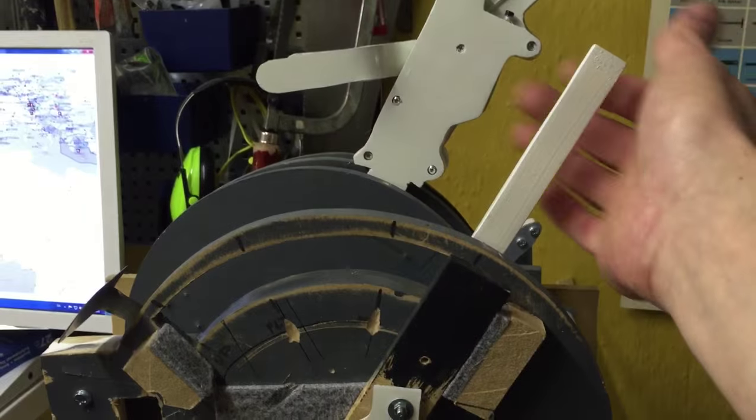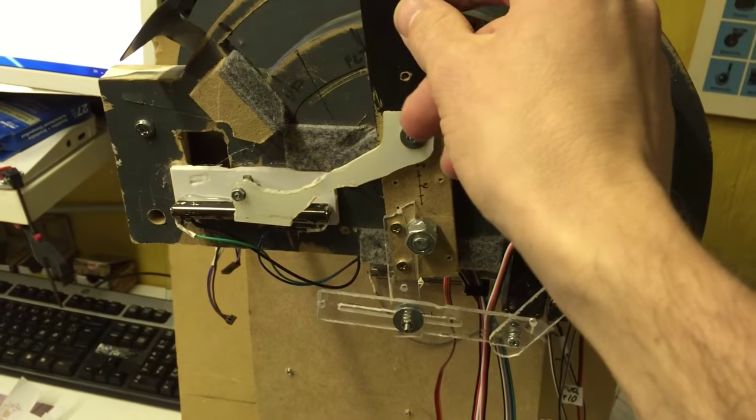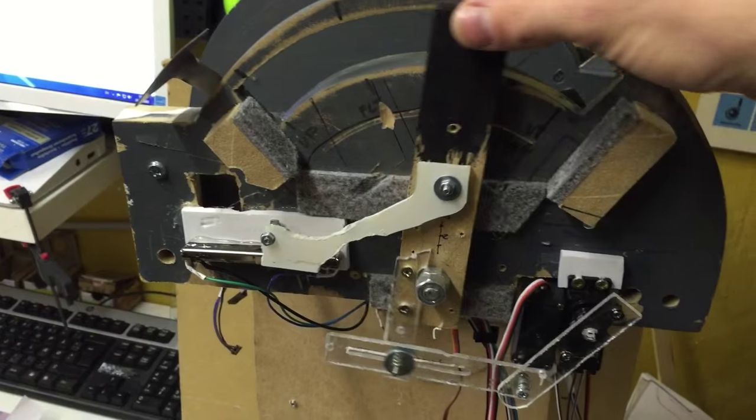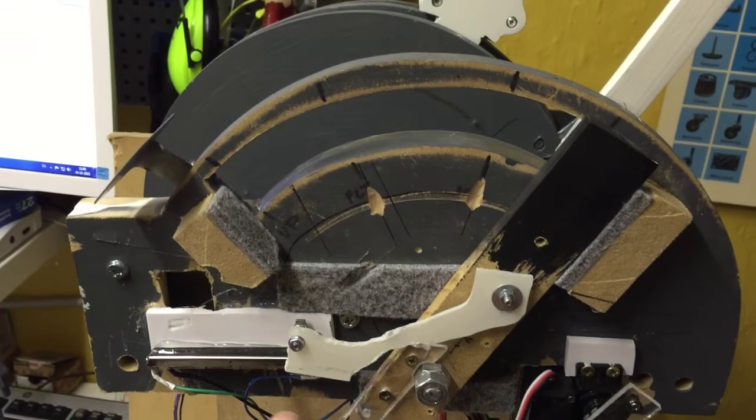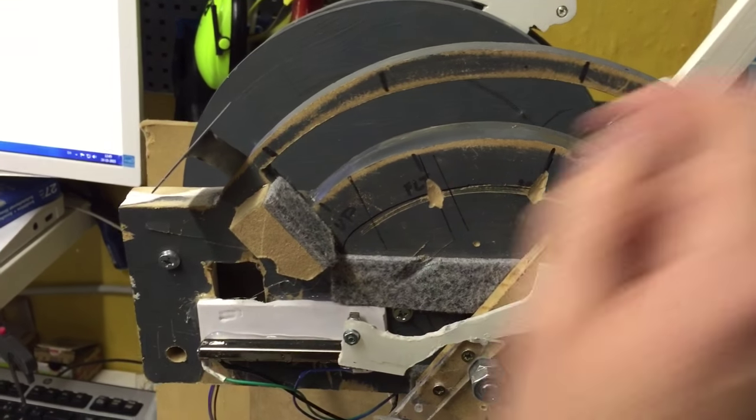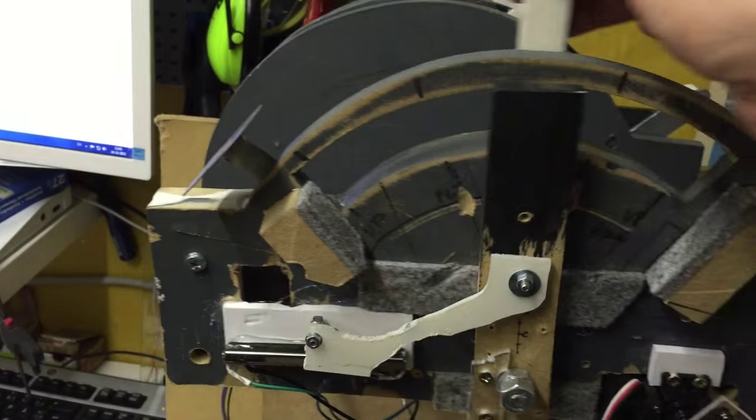The speed brake handle here is made of MDF wood for now and you can move it back and forth. When you do so you can see there's a sliding potentiometer down here that moves accordingly to the arm.